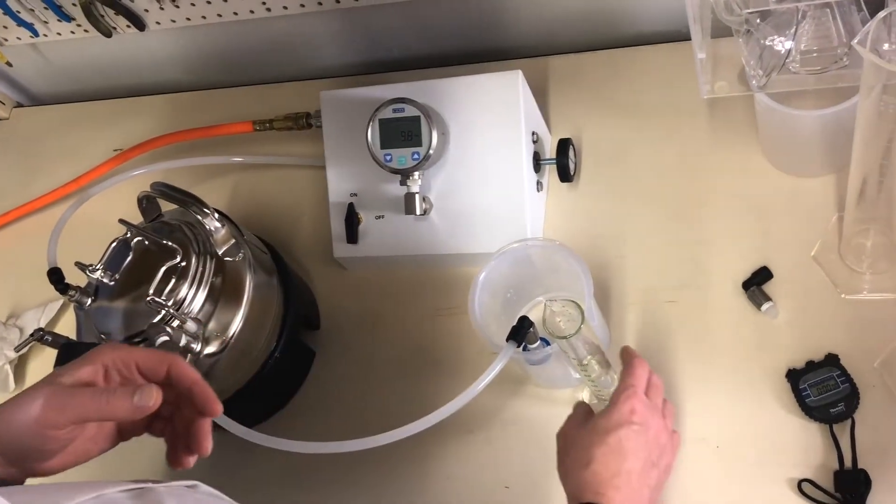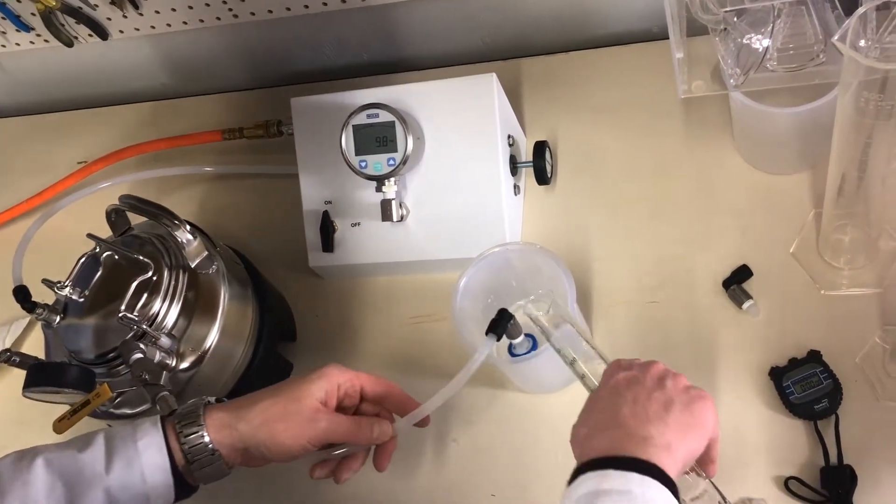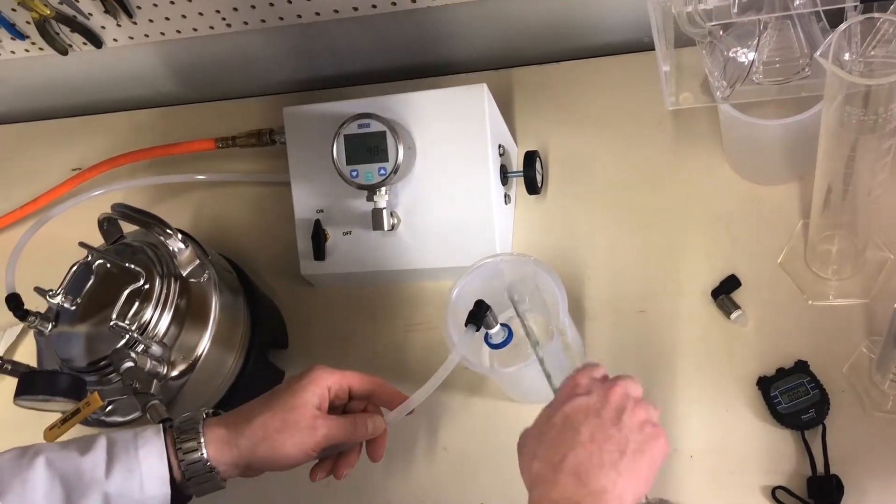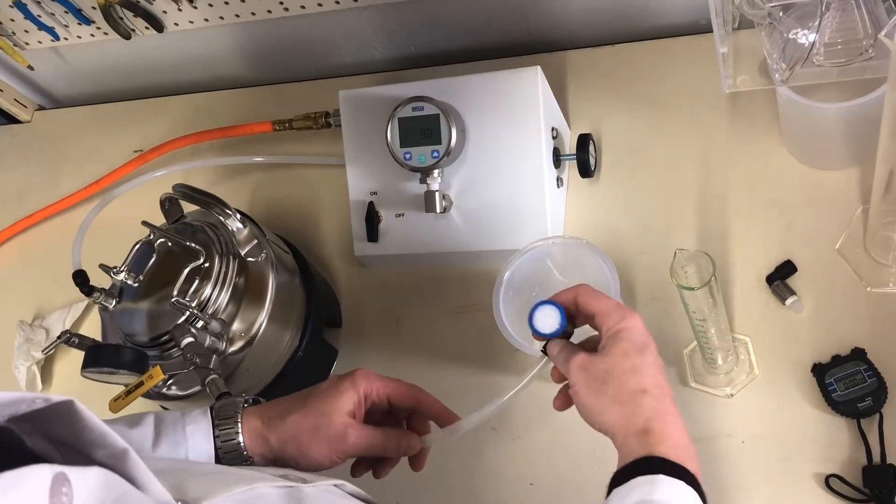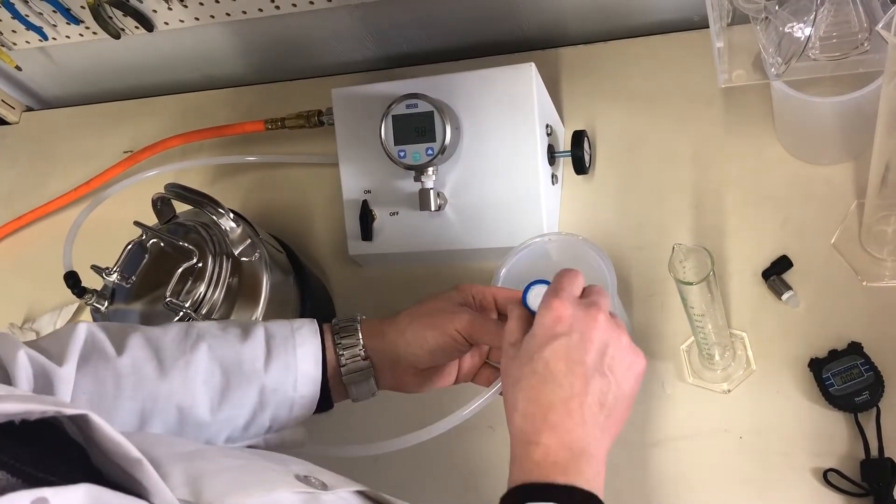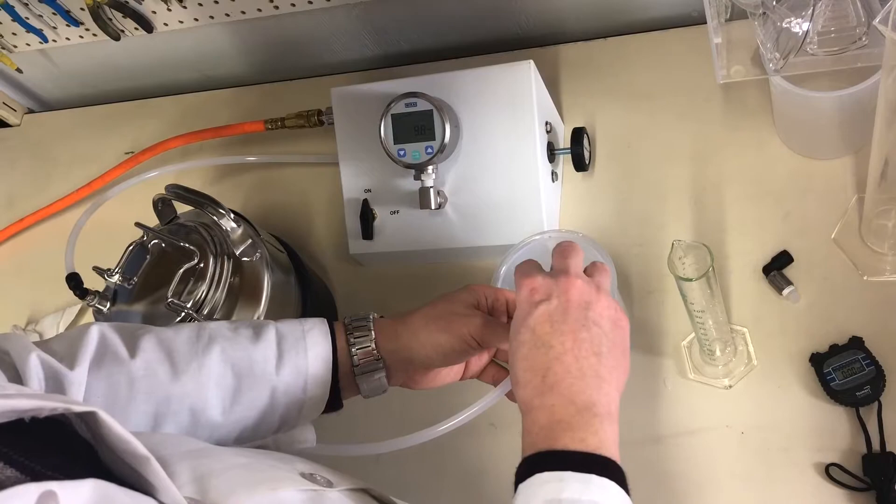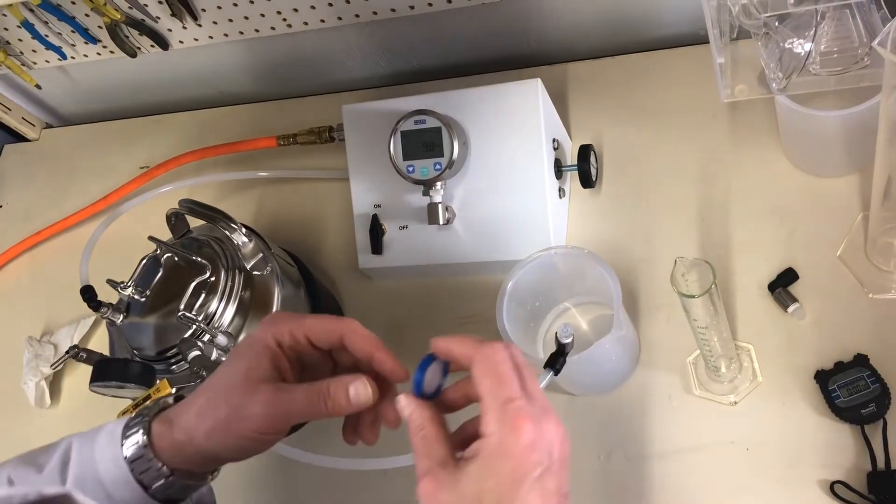The pressure should be pretty stable, and then we'll dump this into the collection beaker, and then we finished. Rotate counterclockwise to remove the filter, and it's on to the next one.